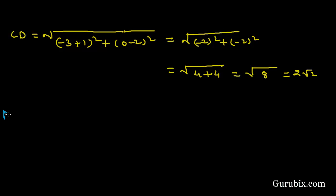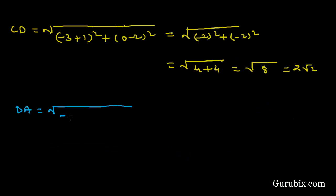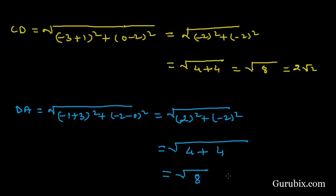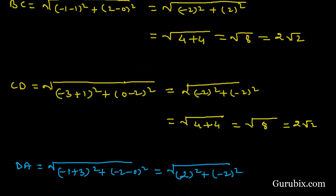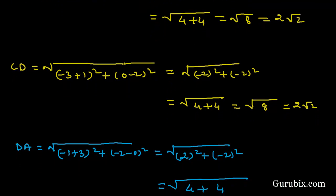Now we find the distance DA: x2 is minus 1 and x1 is minus 3. It equals √((-1+3)² + (-2-0)²) = √(2² + (-2)²) = √(4 + 4) = √8 = 2√2. We observe that all four sides are equal, so we shall now find the lengths of both diagonals.